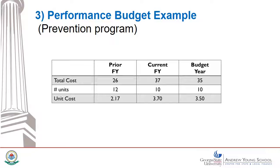Continuing our hypothetical example using data from both the line item and program budget formats, this format gets at the concept of productivity. This particular prevention program wanted to know its total costs. Taking total costs and dividing by the number of units of service performed, they get a per unit cost for prevention services.